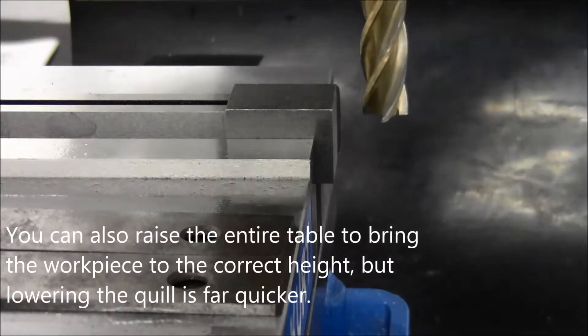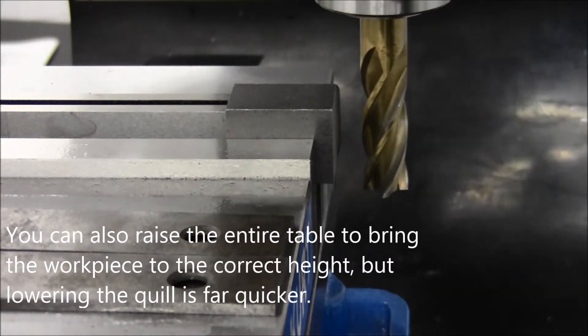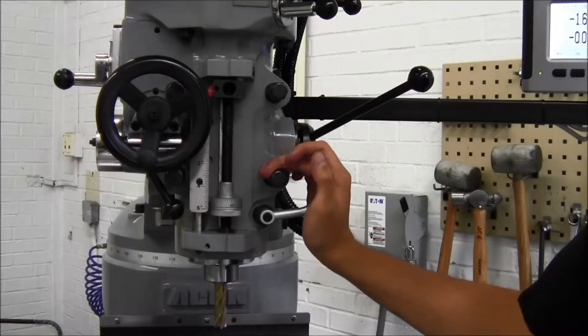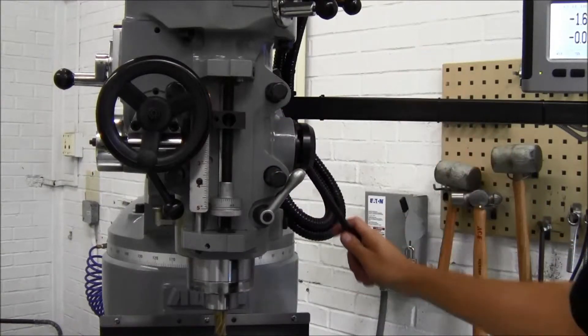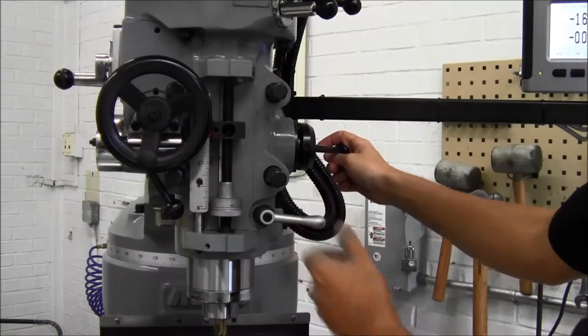You can then lower the quill of the mill to place the end mill at the correct height. To lower the quill, first release the quill lock and pull the lever. When you have found the correct position, be sure to lock it once again.